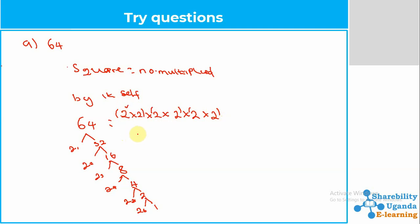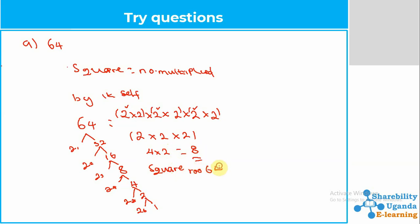We pick one 2 from the first set, times 2 from the second set, times 2 from the third set. We have 3 sets, so we multiply: 2 × 2 × 2, which is 4 × 2, giving us the answer of 8. So the square root of 64 is equal to 8. In simple terms, 8 × 8 equals 64, which confirms it is a perfect square.